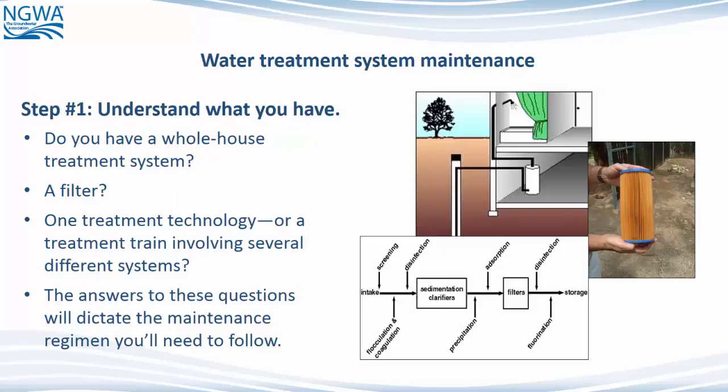Step 1: Understand what you have. Do you have a whole house treatment system? A filter? One treatment technology? Or a treatment train involving several different systems? The answers to these questions will dictate the maintenance regimen you'll need to follow.